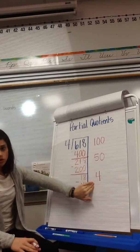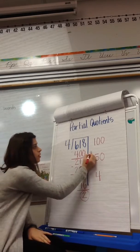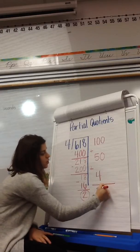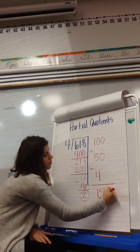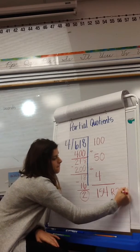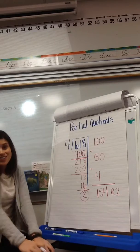Now these are my partial quotients. I'm going to add them up. 100 plus 50 plus 4 is 154. And can't forget the remainder 2. And there it is.